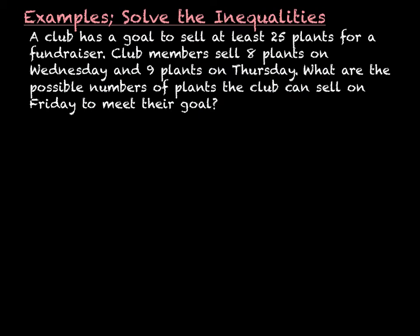In this next example, a club has a goal of selling at least 25 plants for a fundraiser. The club members sell eight plants on Wednesday and nine on Thursday. What are the possible numbers of plants the club can sell on Friday to meet their goal? They want to sell at least 25 plants, so their total is 25, and we have to put in an inequality symbol and do something with the number of plants.